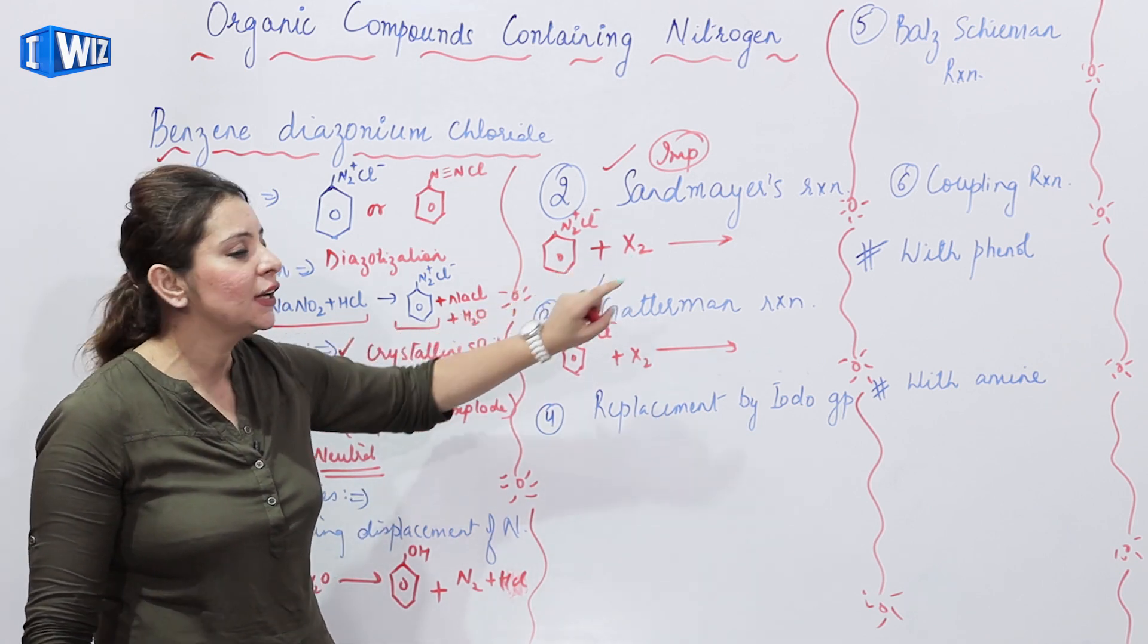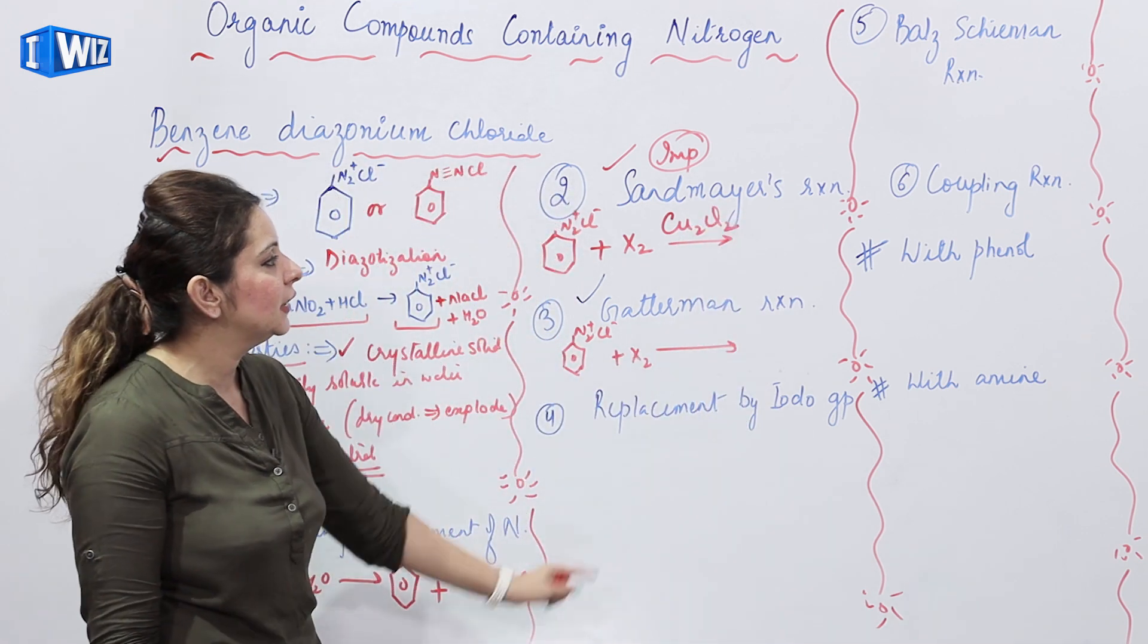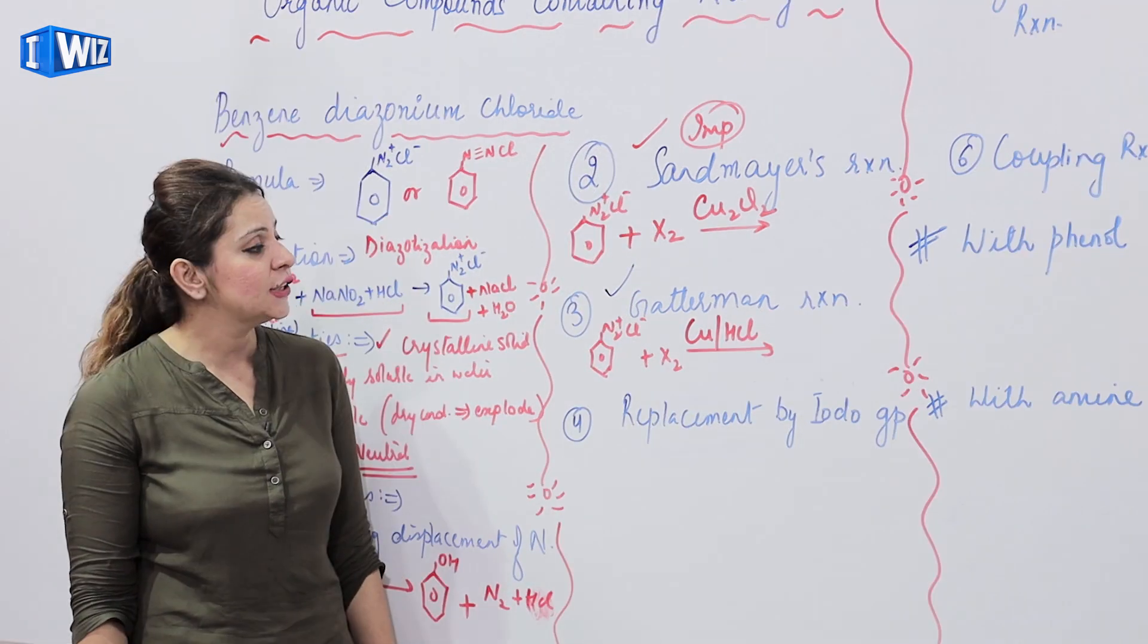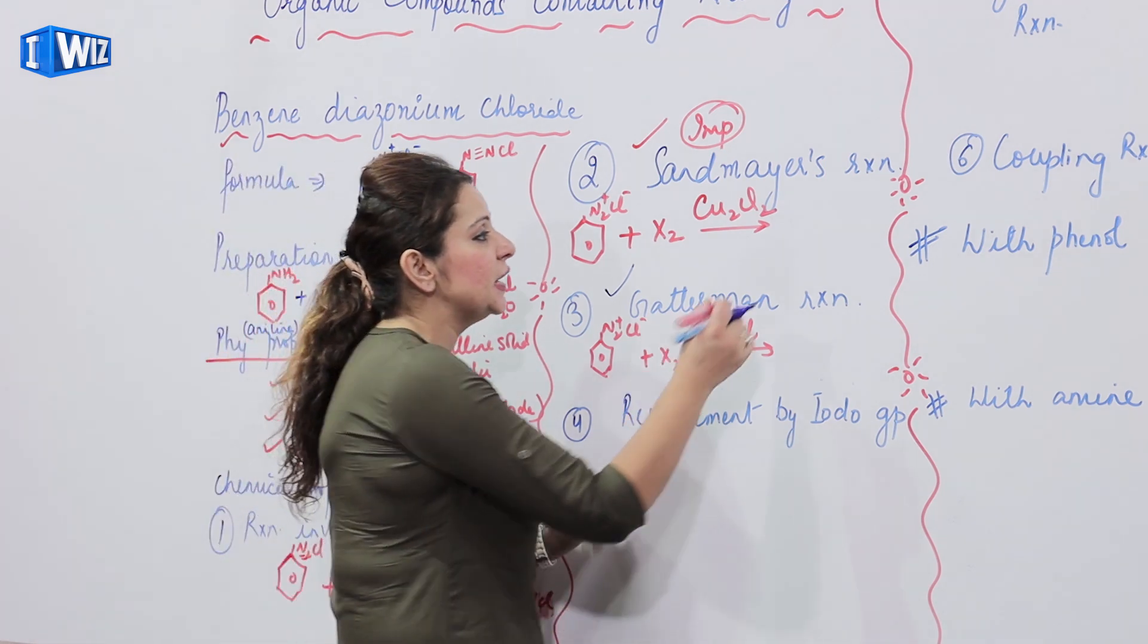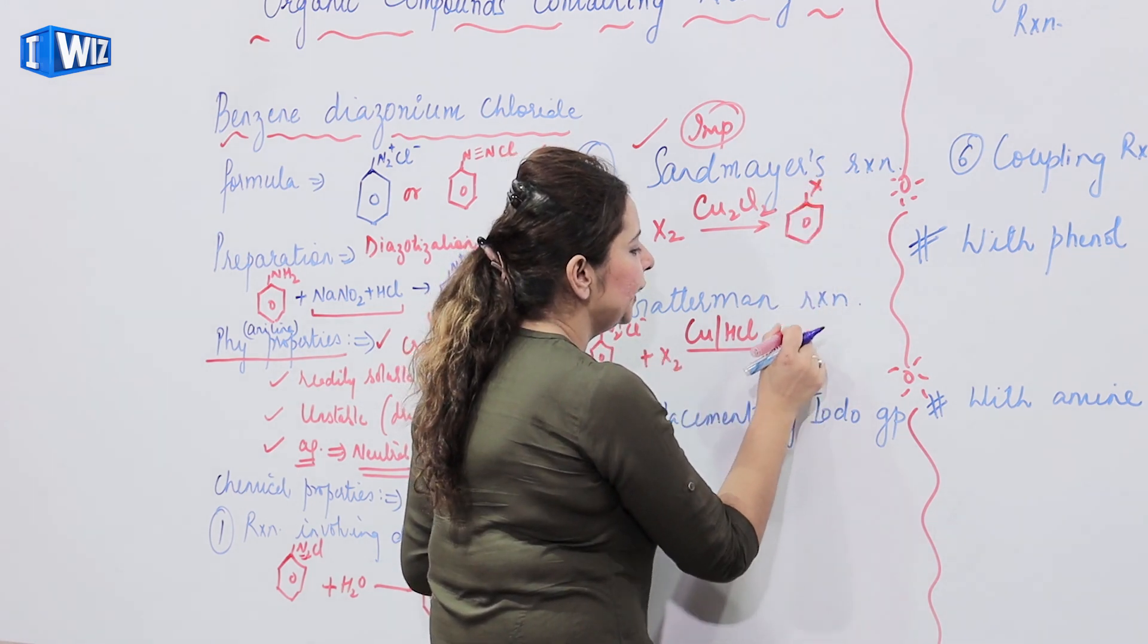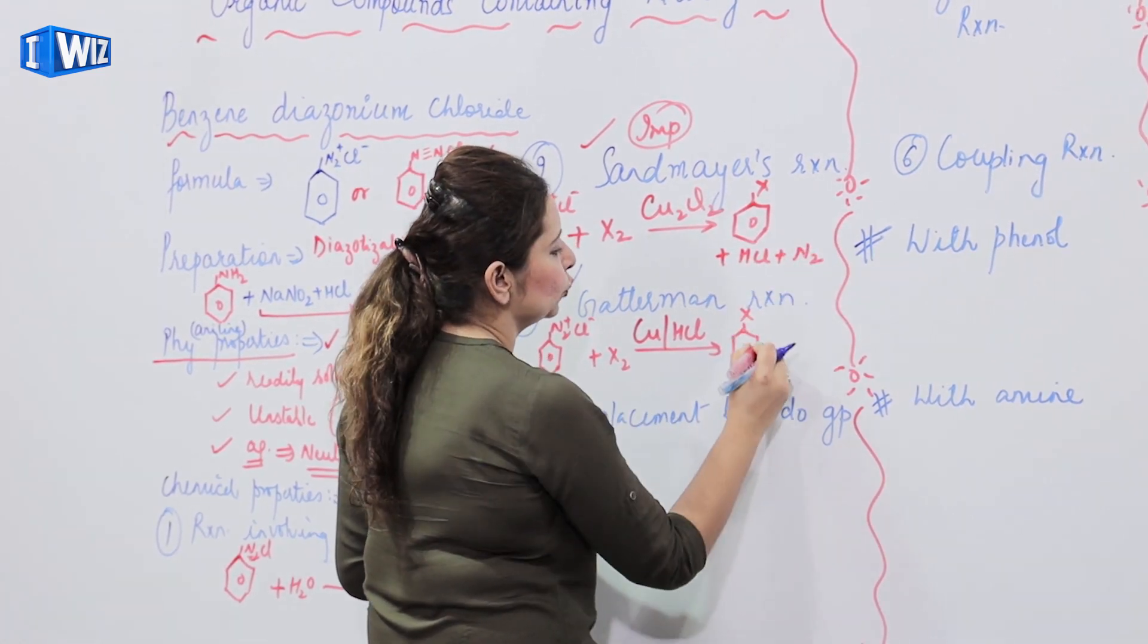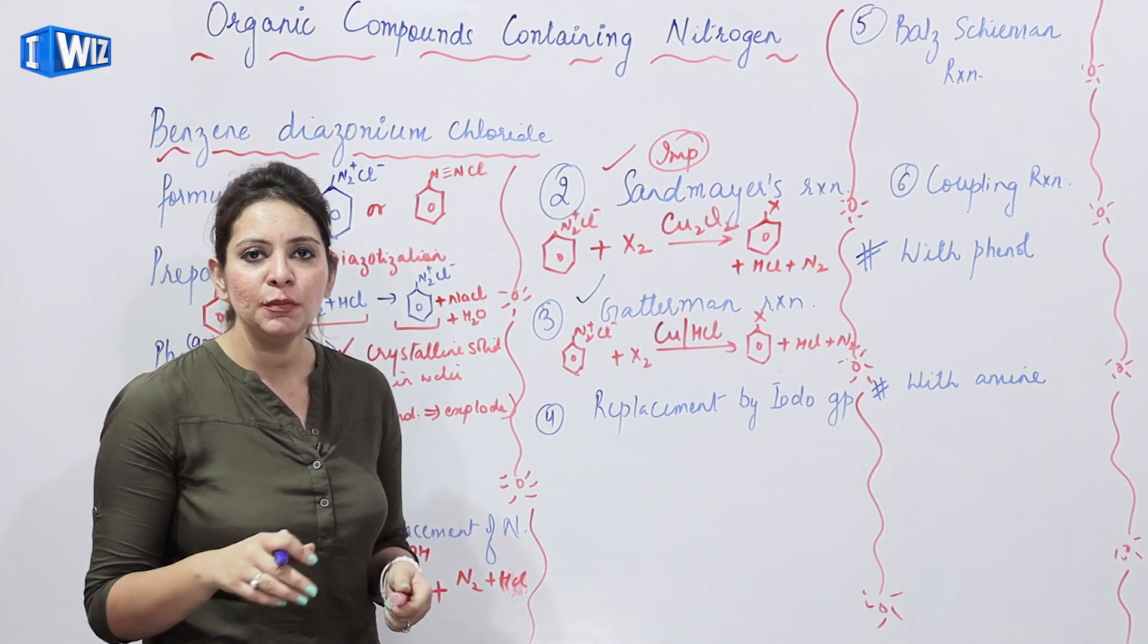What is it? When you do halogenation in Sandmeyer, we take copper salt of that halogen. Let's say, if I want to do chlorination, I will take Cu2Cl2. And in case of Gatterman, we take copper in HCl. What is the special condition here? This reaction is taking place in presence of copper present in HCl. But the product is going to remain same. The halogen will attach to the benzene ring, we'll get haloarene. We'll get haloarene, and along with that, we'll get HCl and N2. Similarly here also, we'll get HCl and N2. So you understand Sandmeyer or Gatterman how it happens.